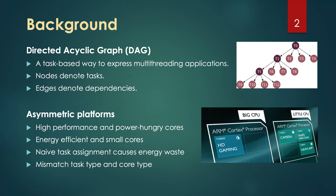Especially nowadays, asymmetric multiprocessor systems feature different types of cores that are implemented with different performance and power consumption — for example, the ARM big.LITTLE architecture. However, naive task assignment without considering core types and task features could result in inefficient utilization of resources, which significantly impacts overall energy consumption.